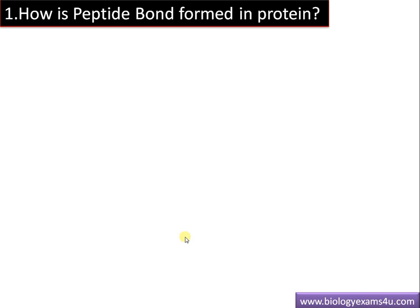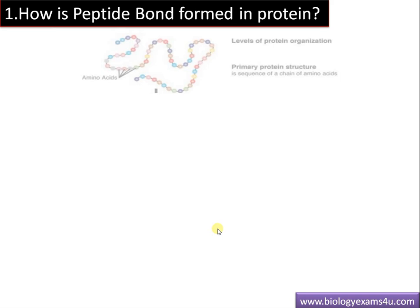First question: how is a peptide bond formed in protein? Proteins are made up of long chains of amino acids joined by peptide bonds, forming the primary structure of the protein.